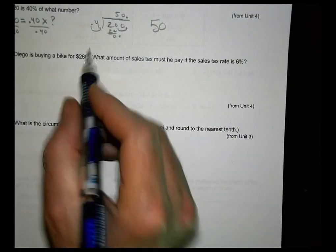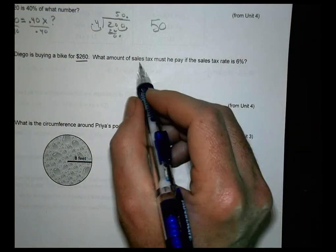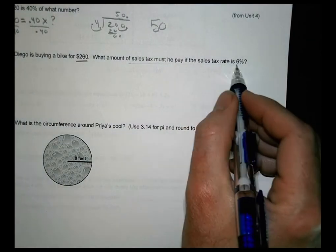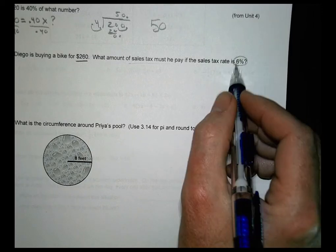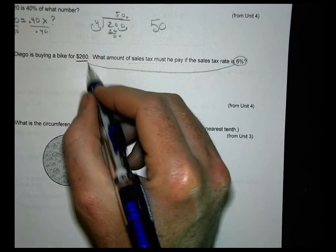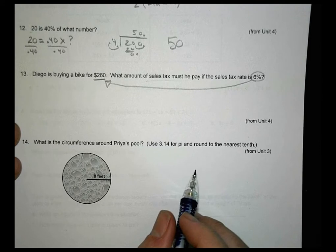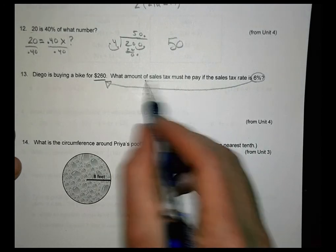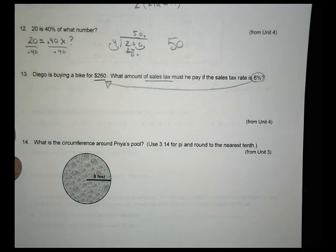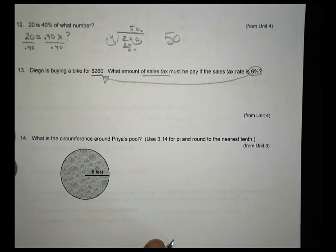13. Diego is buying a bike for 260. What amount of sales tax must he pay? The sales tax rate is 6%. So you want to find out 6% of that amount right there. 6% of 260 to find out the sales tax. That's it. No total cost. Just a tax. And 14.